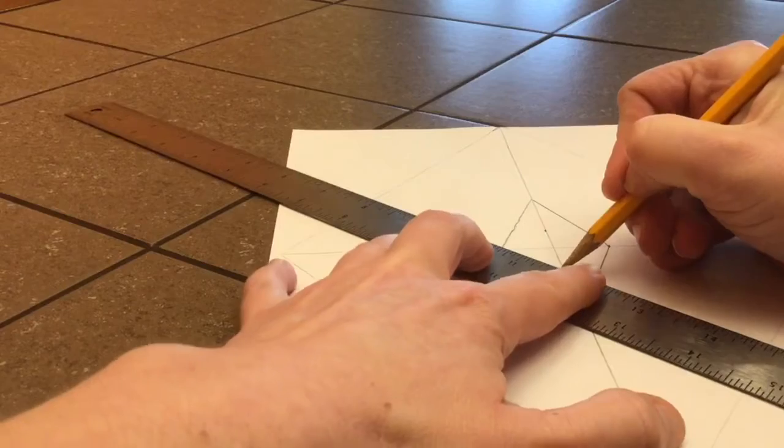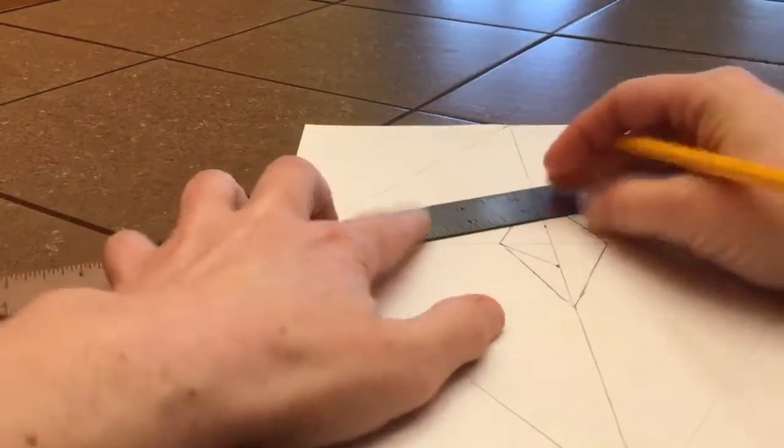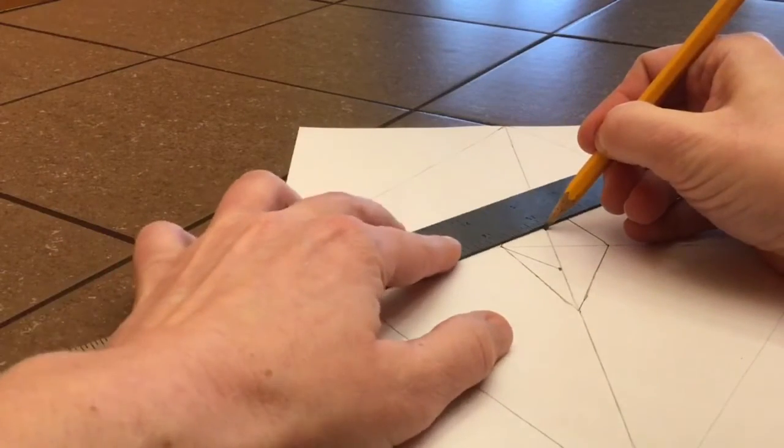If you don't have a ruler, you can use something that has a straight edge, like a book or a notebook.